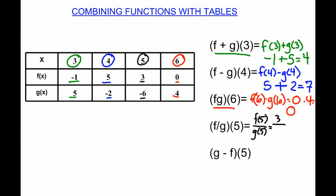So 3 divided by negative 6 is negative 1 half. So (f/g)(5) is negative 1 half.